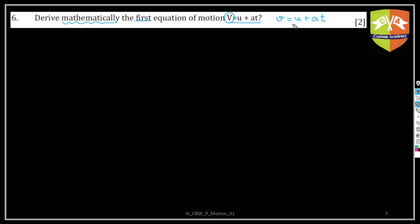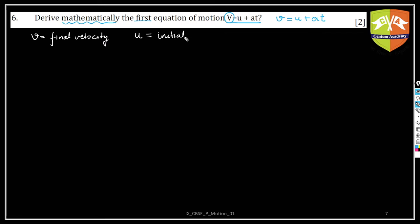Now, what does v stand for? v is final velocity — we already know that. So you should write 'final velocity.' When it is said 'final,' that means there must be some initial also, and that is u. So u is initial velocity.